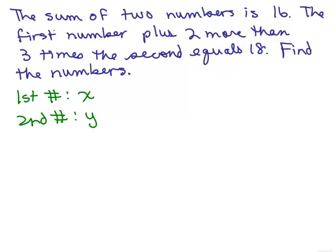So we have x and y for the two numbers. The sum is 16, that's the easy part, so x plus y equals 16. That's one equation.